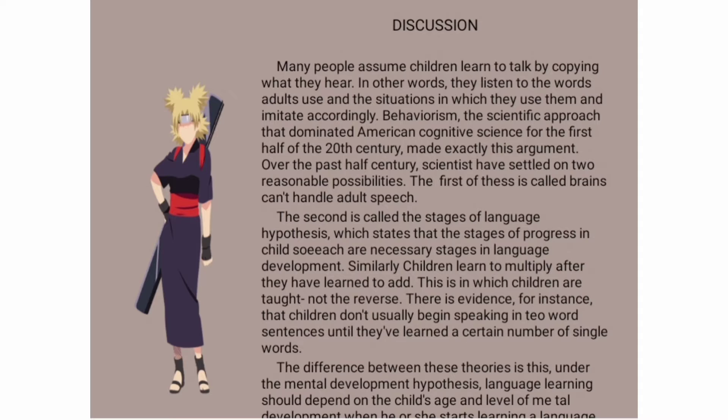Over the past half century, scientists have settled on two reasonable possibilities. The first is called brains that can't handle adult speech. The second is called the stages of language hypothesis, which states that the stages of progress in child speech are necessary stages in language development.